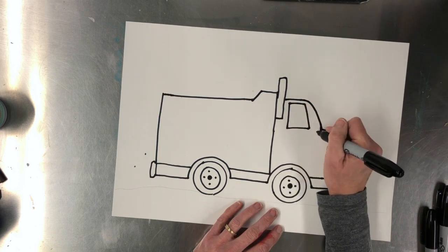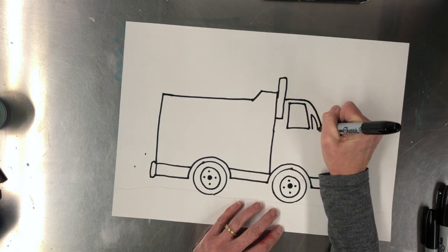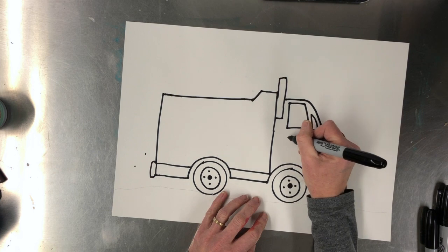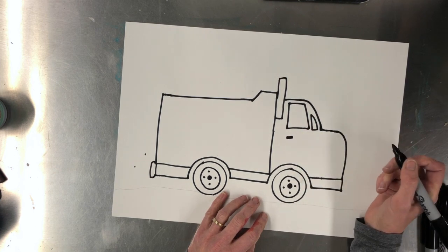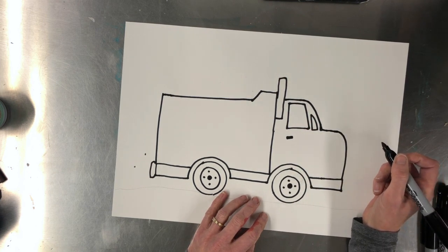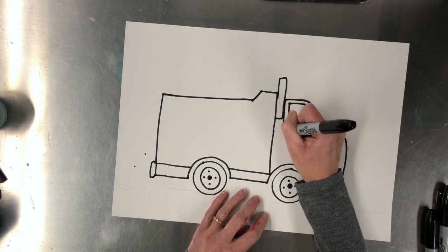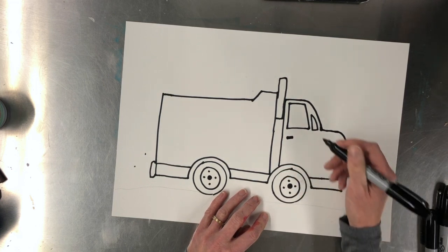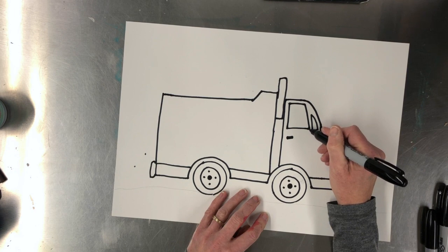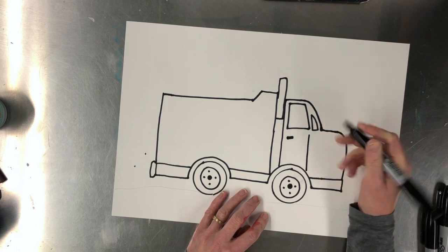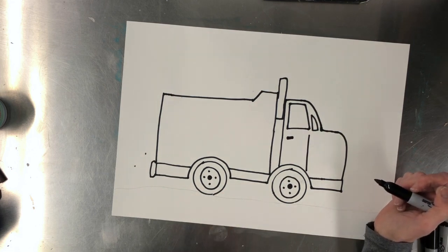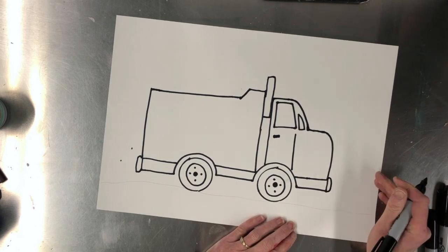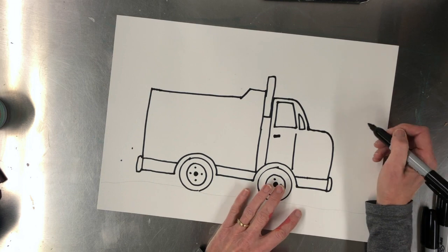And you can make another little window here if you want. I'll draw a little door handle. Then we just want to make a little line that goes all the way down like so. You can make another line right where that window is. Just bring that down so it'll look like the door. Again, we can do a little bumper.